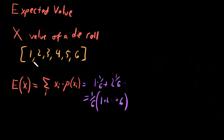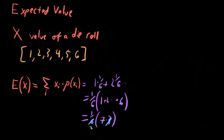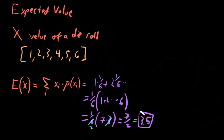That's multiple pairs of 7: 6 and 1 is 7, 5 and 2 is 7, 3 and 4 is 7 — so three pairs of 7. It's 1/6 times 7 times 3, and we can cancel the 3 with the 6 to get 7/2, which is 3.5. And that is the expected value of any single roll of a six-sided die.